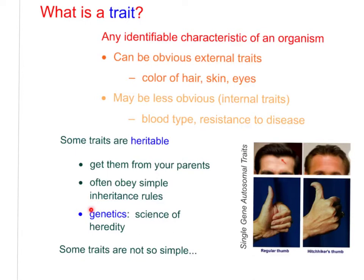Some traits are not quite as simple as we think. Here are some examples of very simple traits — these are single gene autosomal traits. Widow's peak: you might look in the mirror to see if you have one. This man has a widow's peak; this man does not. That's an inherited trait passed on by one single gene. Hitchhiker's thumb is also an inherited trait passed on by a single gene — see if you can do that with your thumb.